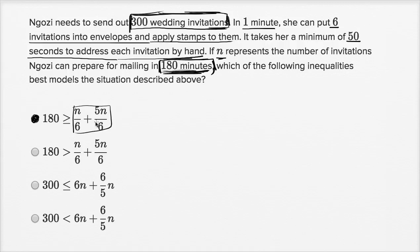It looks like they did everything in minutes, so let's do everything in minutes. In one minute, she can put six invitations into envelopes. So any one invitation, how much time would she spend sticking it into an envelope and applying stamps? Well, she's going to spend a sixth of a minute. I'm going to do everything in minutes because these look like they're in minutes. A sixth of a minute putting any one invitation into an envelope and putting stamps on them.